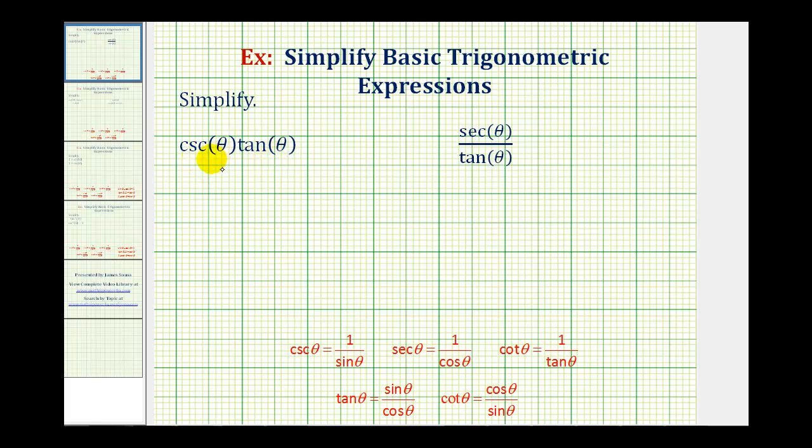So for cosecant theta times tangent theta, cosecant theta is equal to one divided by sine theta, and tangent theta is equal to sine theta divided by cosine theta.